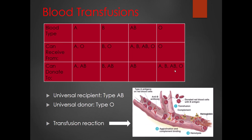If you give someone the wrong blood, a transfusion reaction occurs. For example, a type A person has A antigens and anti-B antibodies. If you give that type A person type B blood, the anti-B antibodies will attach to the B antigens on the donor blood, causing agglutination — clumping — where red blood cells stick together. This can cause clots, burst blood cells, internal bleeding, reduced oxygen-carrying capacity, and restricted blood flow. You can literally kill somebody, so understanding blood typing is incredibly vital for anyone in the healthcare field.